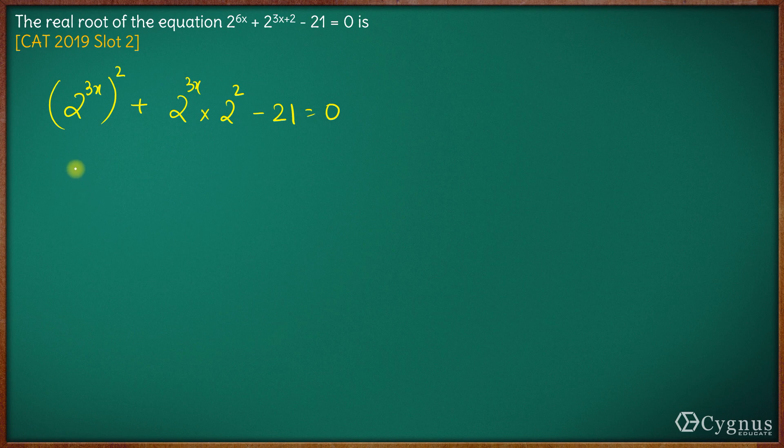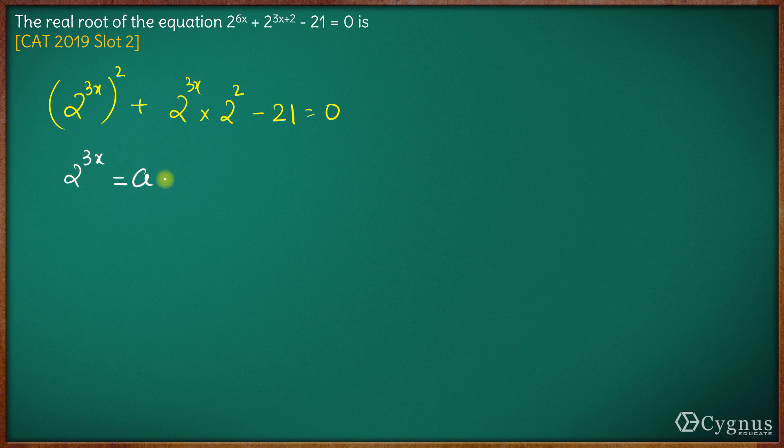Now, why do I do this? To simplify this equation, let us assume 2 raised to power 3x equals a.